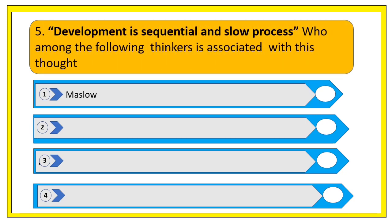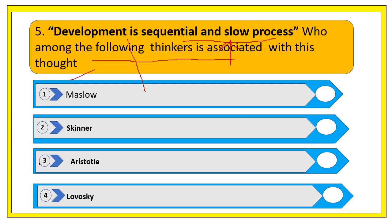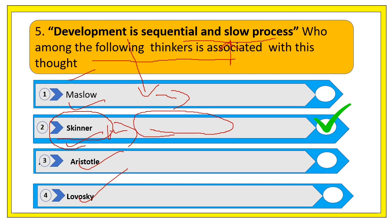Question five: development is a sequential and slow process — which thinker is associated with this thought? The options are Maslow, Skinner, Aristotle, and Lebowski. The right answer is Skinner. That concludes today's five questions. From tomorrow we'll start the regular continuous series of classes covering each and every chapter in sequence. Thank you for joining. Have a nice day. Keep learning and keep subscribing.